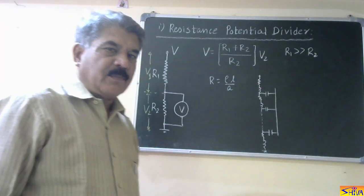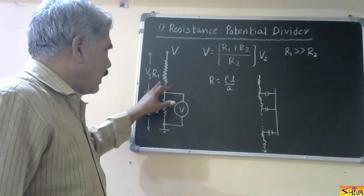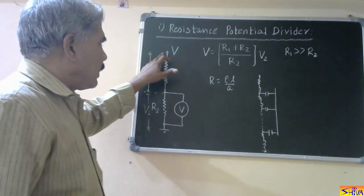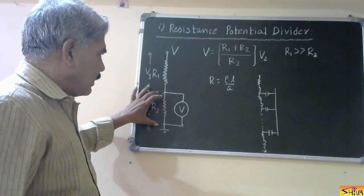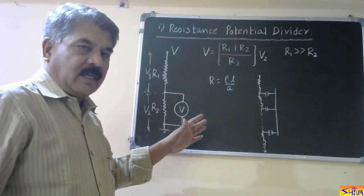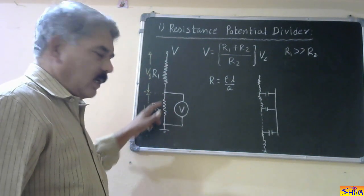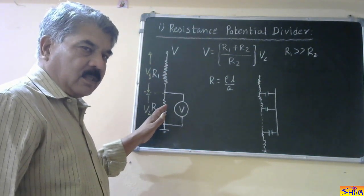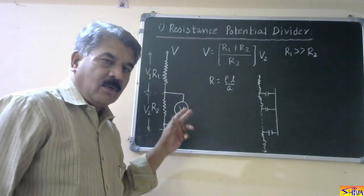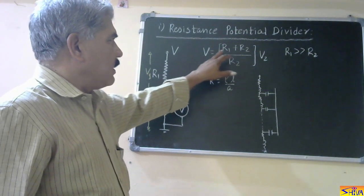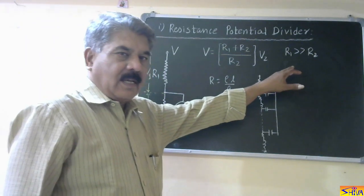In the resistance potential divider, the impedances are replaced by resistances R1 and R2. The voltage applied is V — that is the very high voltage to be measured. The voltage drop across R1 is V1 and across R2 is V2. The ratio is selected to approximately 1000 to 1 or more, so only a few volts appear across the low voltage arm. The voltmeter is connected across this arm and calibrated accordingly. The equation is V = (R1 + R2) / R2 × V2. R1 is very large compared to R2.